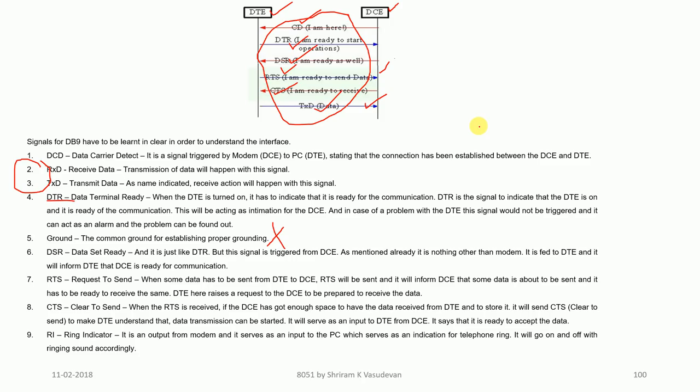There is one more signal called RI — ring indicator. Those who have used older dial-up modems connected through a telephone line will remember connecting and hearing a strange sound, going through the connect process, and waiting while various sounds played — all of that is the ring indicator. It is definitely an older feature; modern users can look up dial-up modems to understand it.